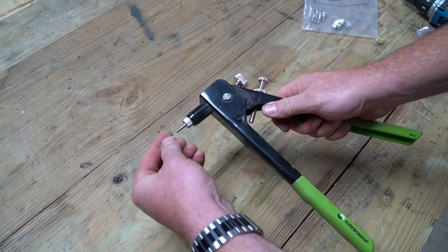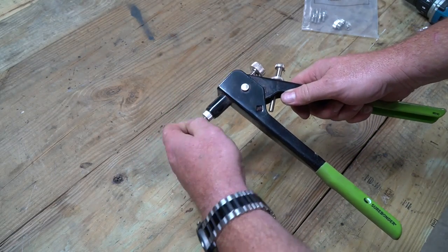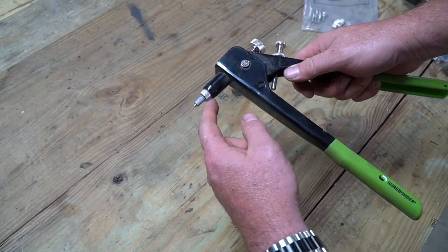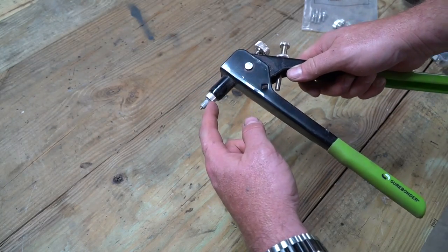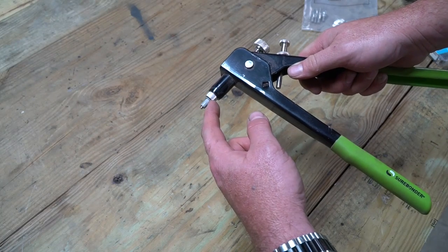Then you screw your rivet on. You put this down into the hole that you want this to be in and you squeeze the handles and it's that simple.